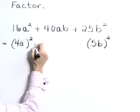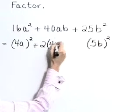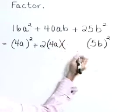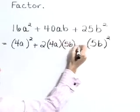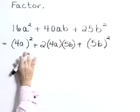Now, is our middle term equal to 2 times the product 4a times 5b? Well, that's 2 times 4a times 5b equals 40ab. Yes, it is.